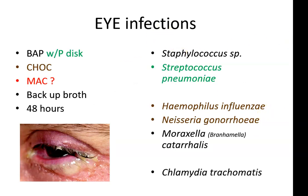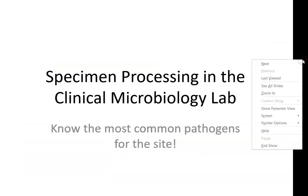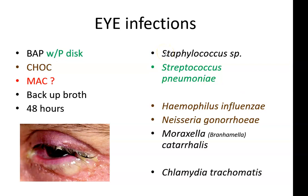Eyes that get infected can be caused by a few different things. One of the things we look for in eye infections is staph — sometimes staph epidermidis from a scratch where normal flora got in. Staph aureus infections in the eye are very purulent. Streptococcus pneumoniae is a common eye pathogen, as well as Haemophilus influenzae and Moraxella catarrhalis.